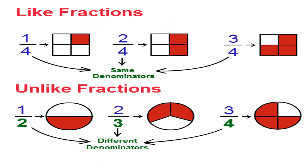Now let us understand what are like fractions and unlike fractions. In like fractions, if two or more fractions — a group of fractions — have exactly the same denominator, then they are said to be like fractions. You can say the fractions having the same number at the bottom, that is the denominator, are like fractions. You can see in the picture: one by four, two by four, and three by four — all the denominators are the same, so they are like fractions.